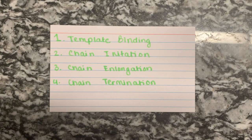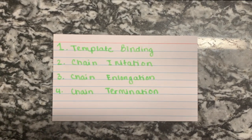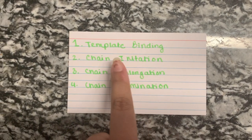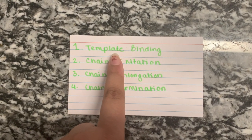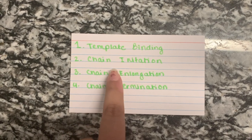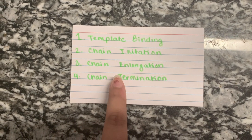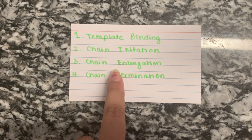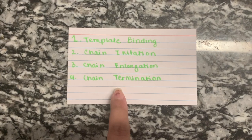Today we'll be discussing transcription of DNA into RNA in a prokaryotic cell. There are four main steps: template binding, initiation of transcription, elongation of our RNA strand, and finally termination of our chain.